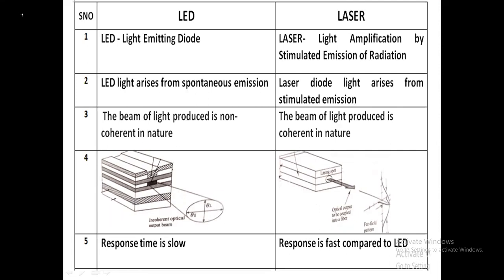In today's class, I'm going to discuss the differences between LED and laser light. In optical fiber communication, these are the two basic light sources used for transmission of light signals. LED means light emitting diode, and laser is light amplification by stimulated emission of radiation. From these definitions, we can understand that both small devices are capable of producing light.